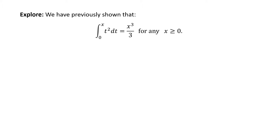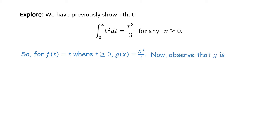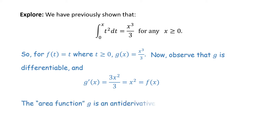Let's explore. We have previously shown that the integral from 0 to x of t squared dt is equal to x cubed over 3 for any x equal to or greater than 0. So for f of t equals t squared, where t is equal to or greater than 0, g of x equals x cubed over 3. Now observe that g is differentiable and g prime of x, that's the derivative, is equal to 3x squared divided by 3, which is equal to x squared, which would be equal to f of x. The area function g is the anti-derivative of f.